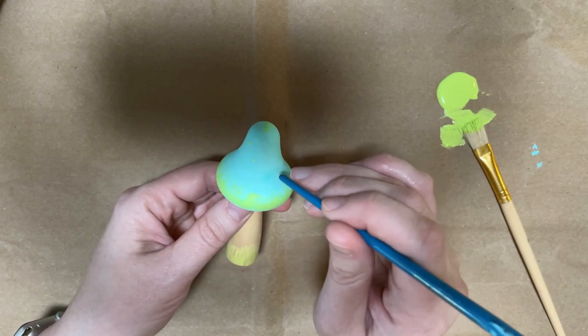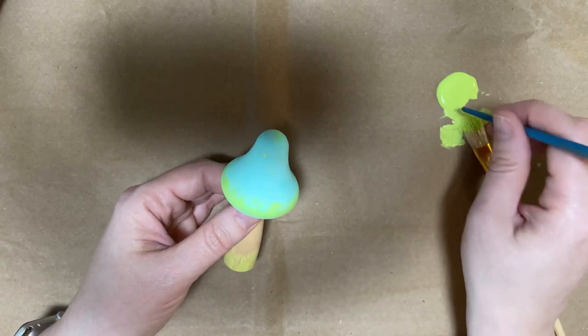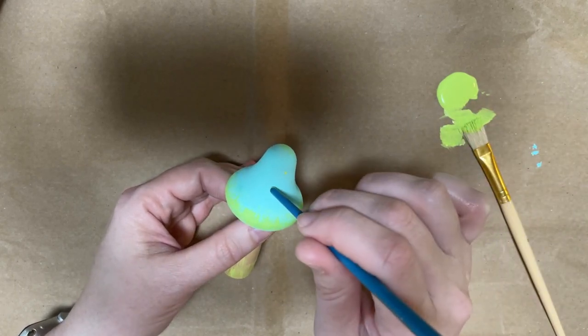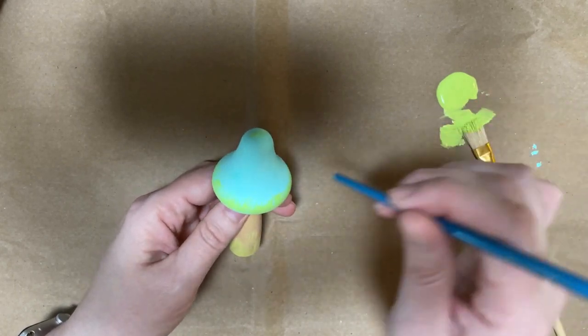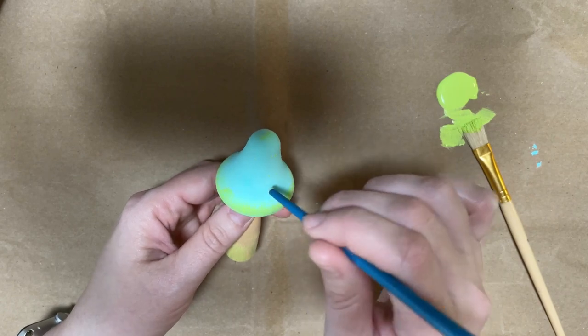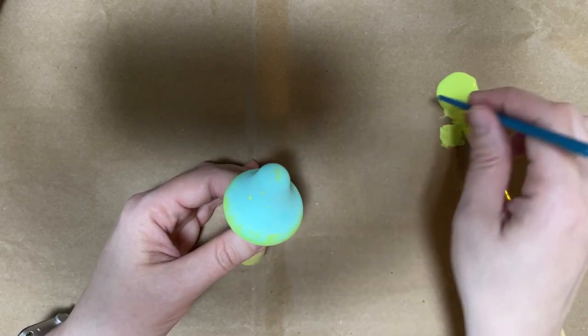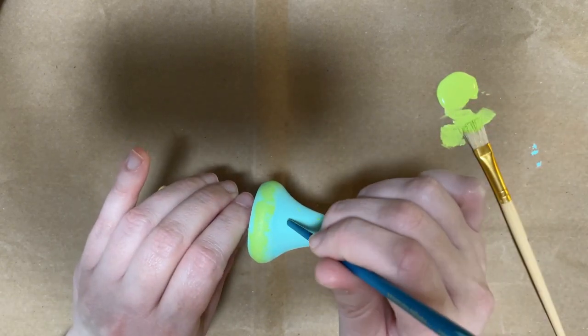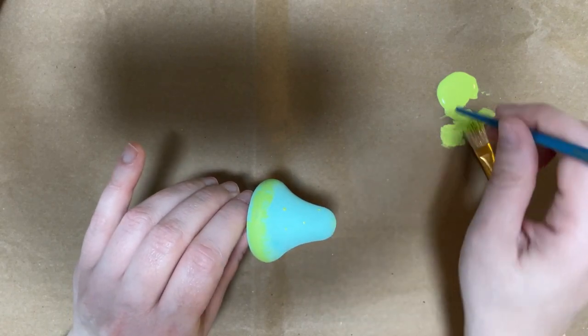But then I'm taking some of the green and I'm dry brushing along the bottom. If you want to add a face, I would add it using either a marker, like a permanent marker...